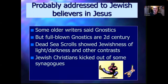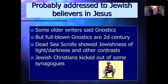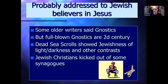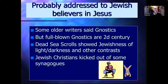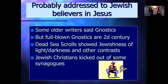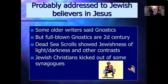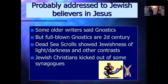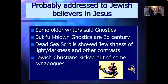Most scholars believe that the Gospel of John was addressed especially to Jewish believers in Jesus, and also some Gentiles who recognized that they were converting to Jewish faith, faith in the Jewish Messiah, the Jewish God, the Jewish scriptures. So it's very Jewish in its content. Some older writers, as early as the late second century, said it was addressed especially to refuting Gnostics. But full-blown Gnostics don't appear until the second century. The Dead Sea Scrolls showed scholars the Jewishness of the light-darkness motif and other contrasts, and helped them recognize that it probably goes back to first-century debates within synagogues, and John was addressing those debates.